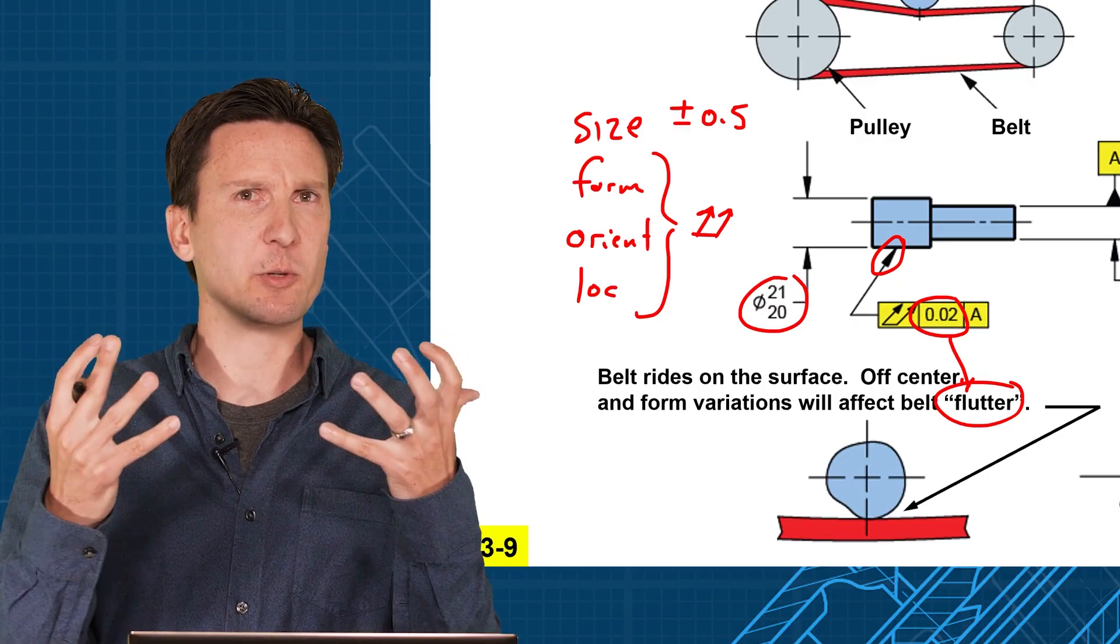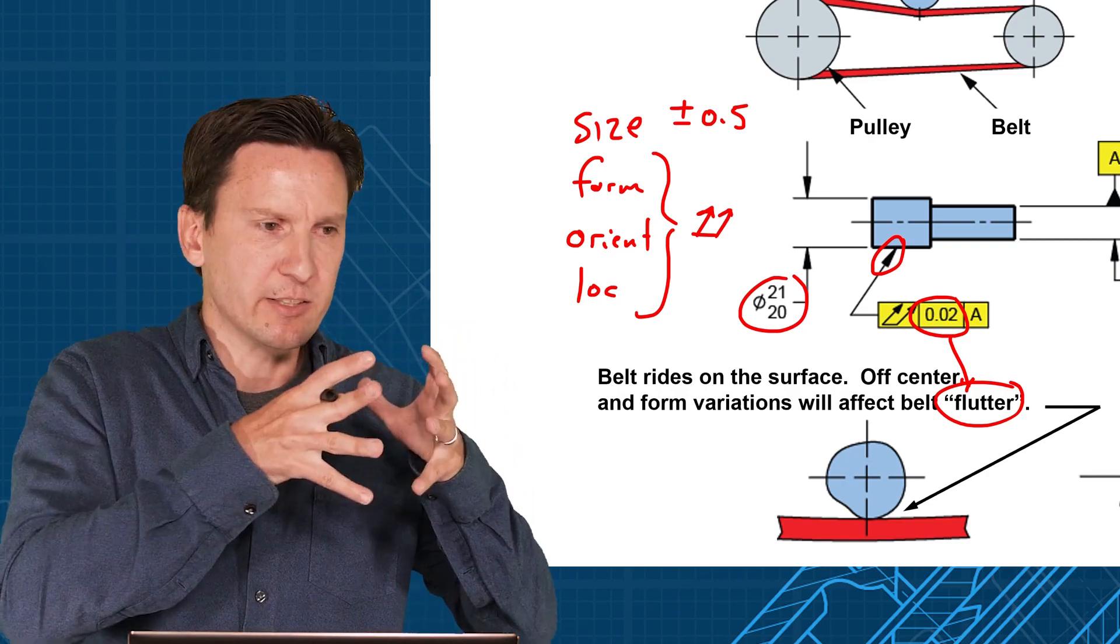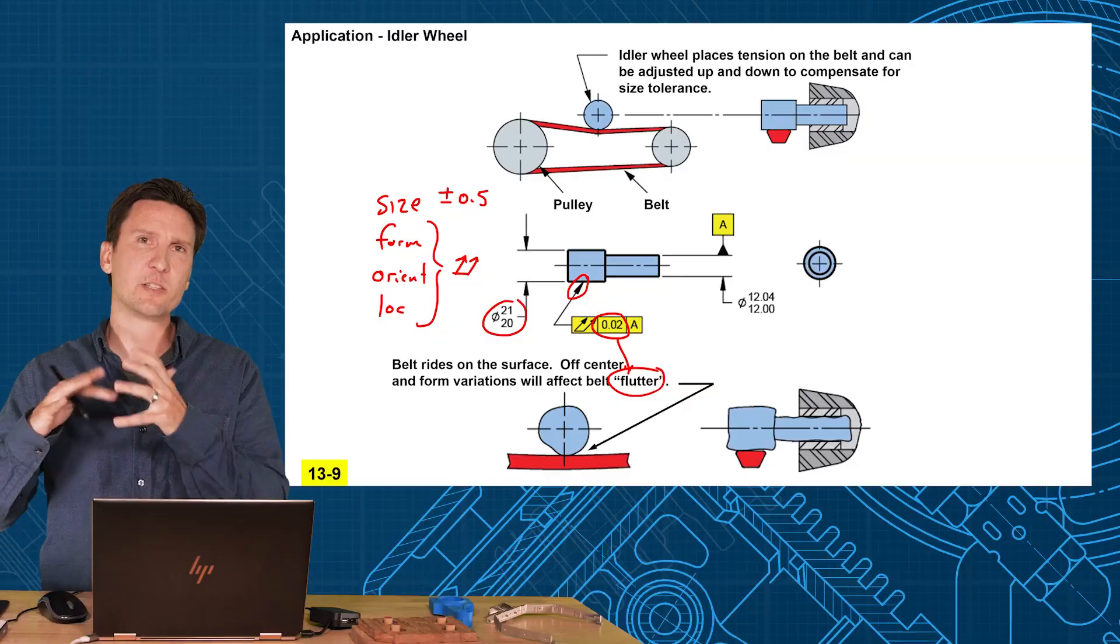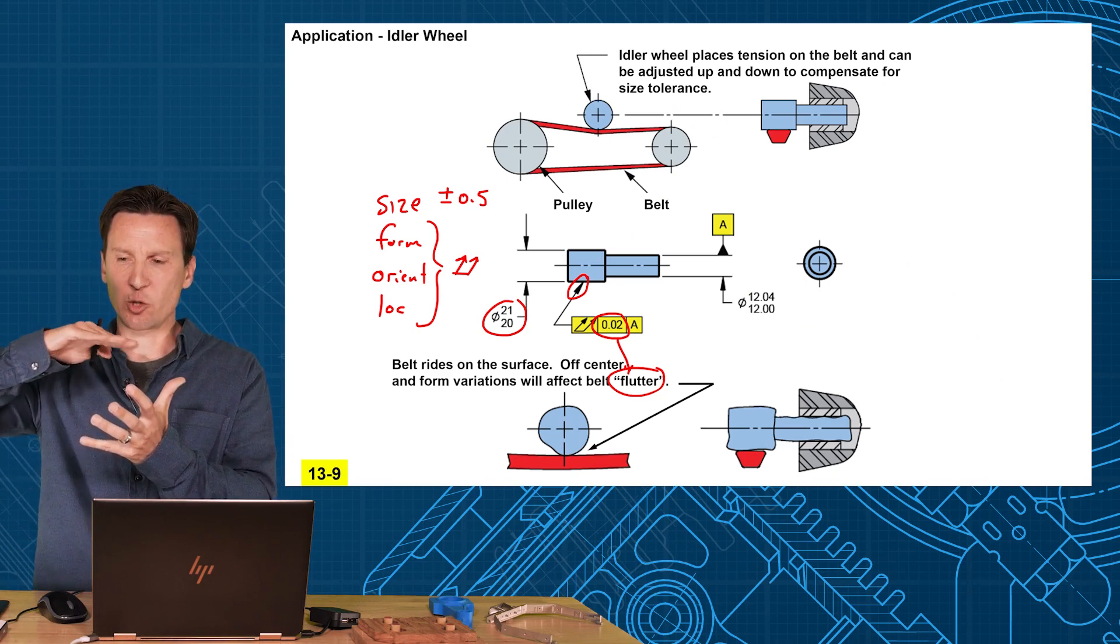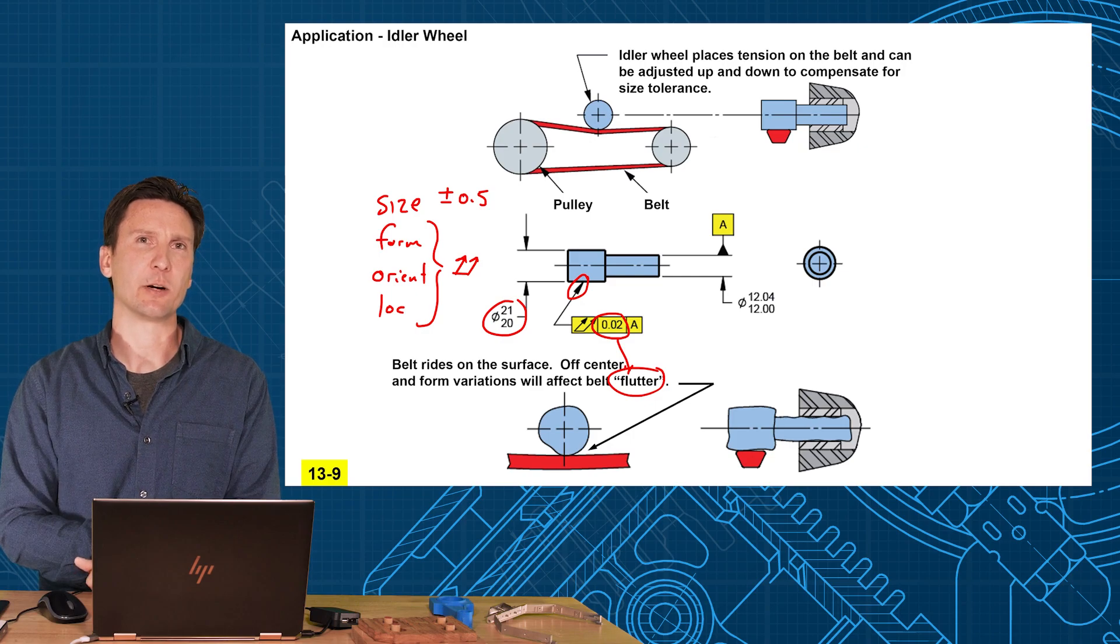So I hope you see the difference between those applications. Position, you already had a tight size tolerance for a fit. Something that fits on the high points and mounts. You've got a tight size tolerance, then you position it. This is more like a pulley or something that has to ride on the surface. And that surface control runout might be a better application here.